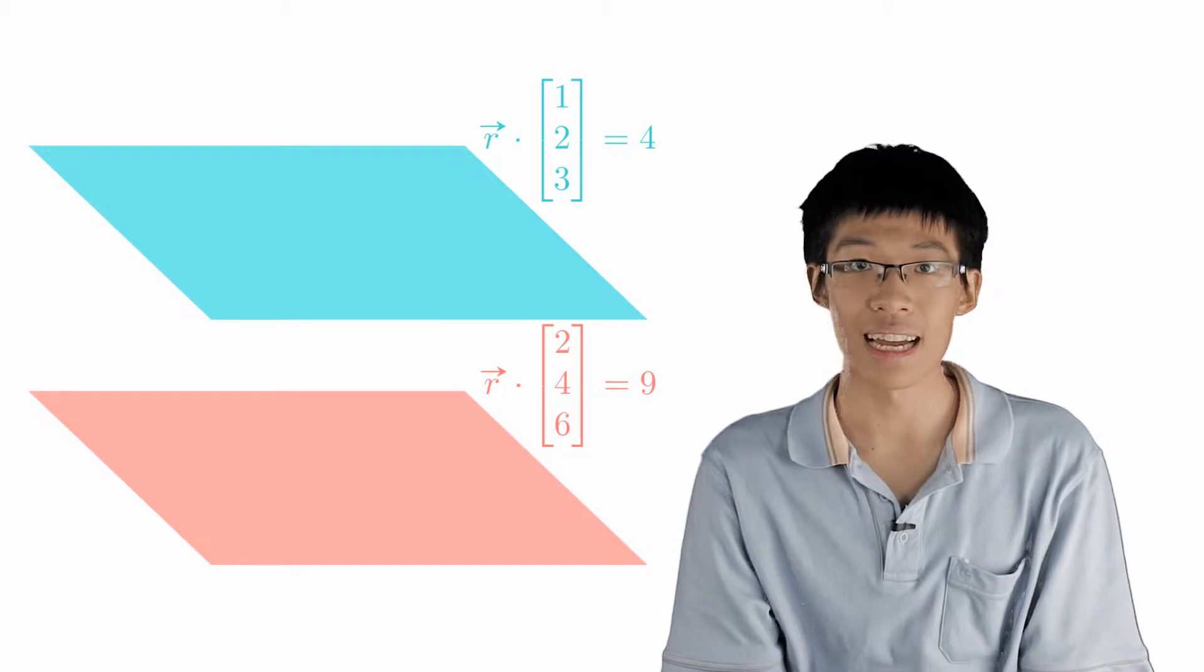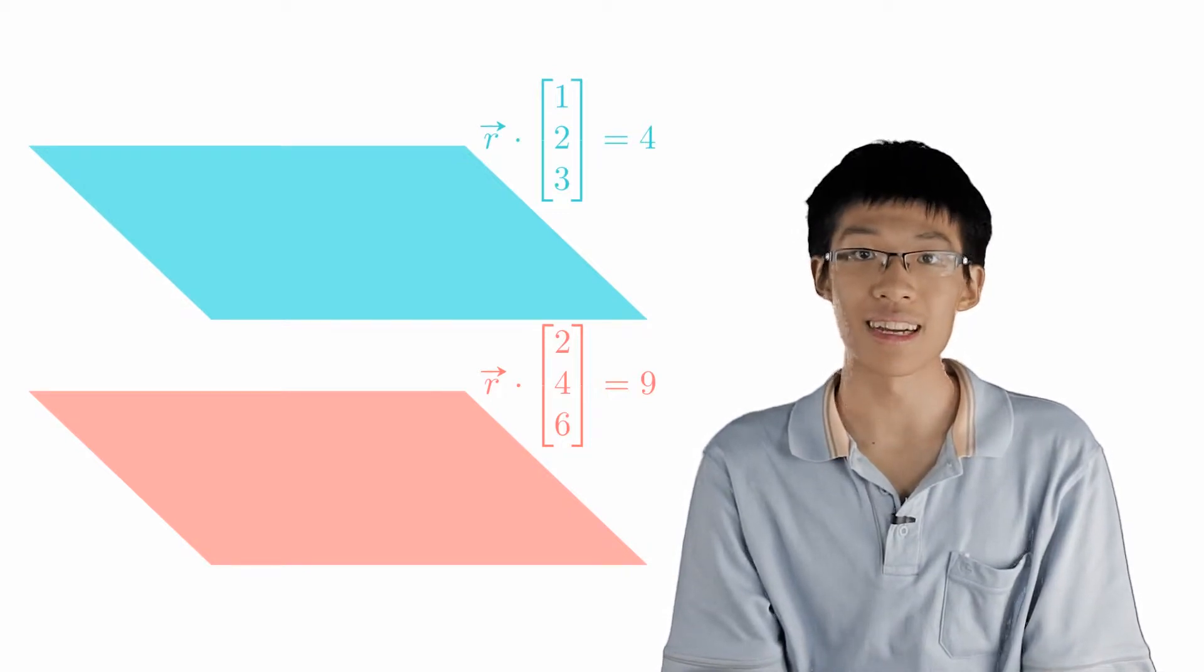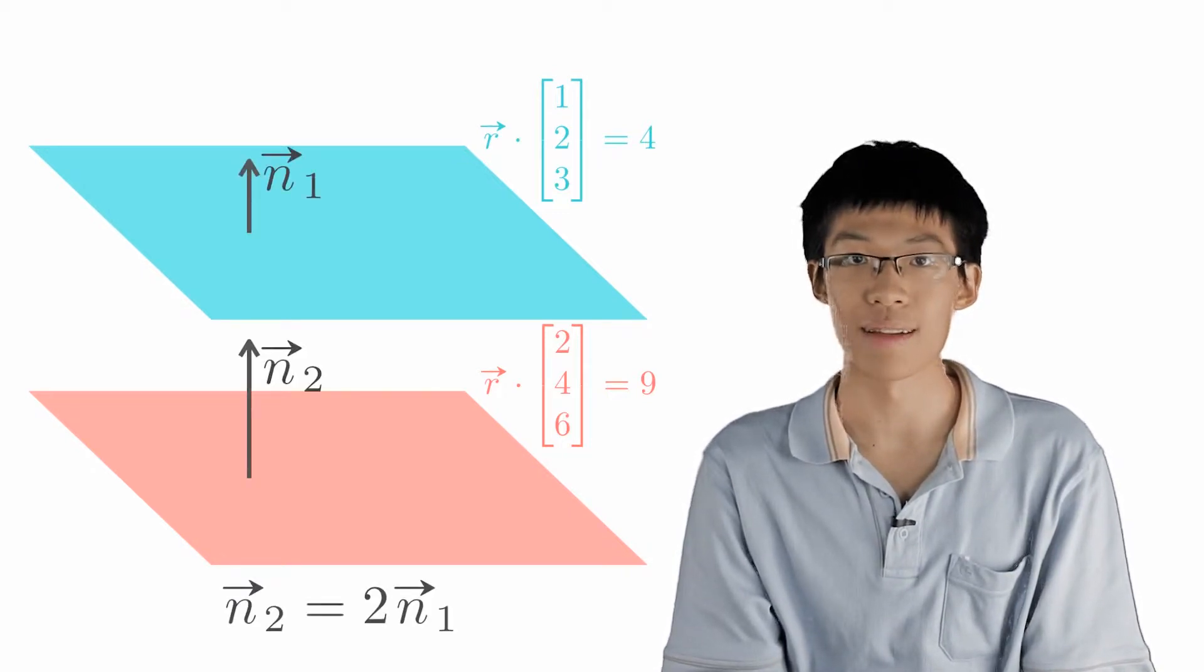When we rewrite the left-hand side as a dot product, it is clear that the normal vectors are pointing in the same direction.